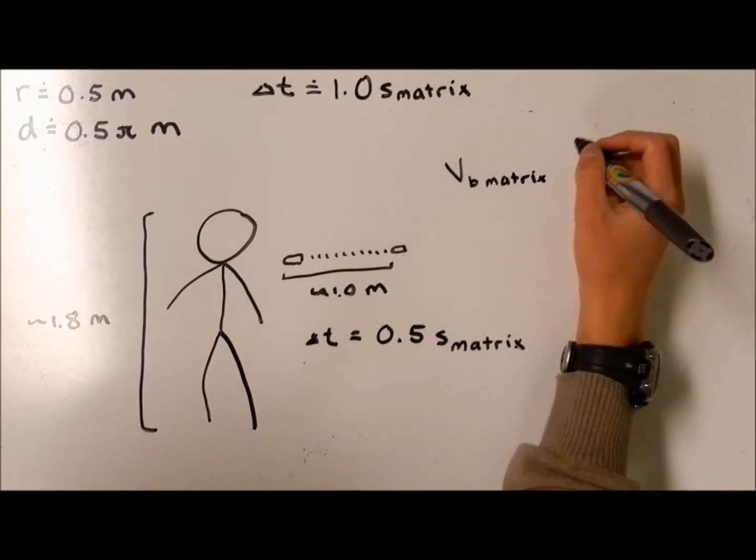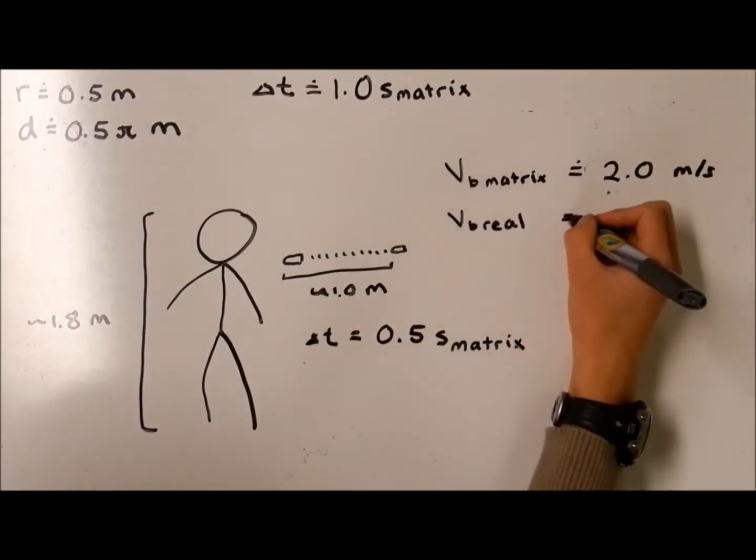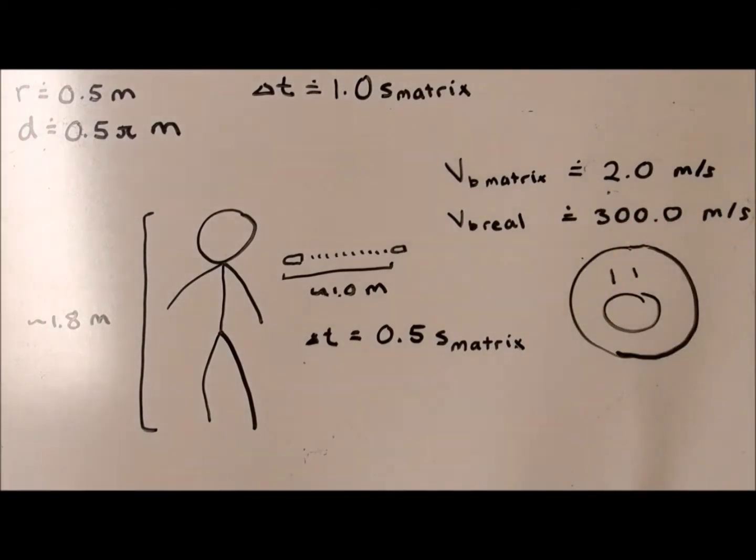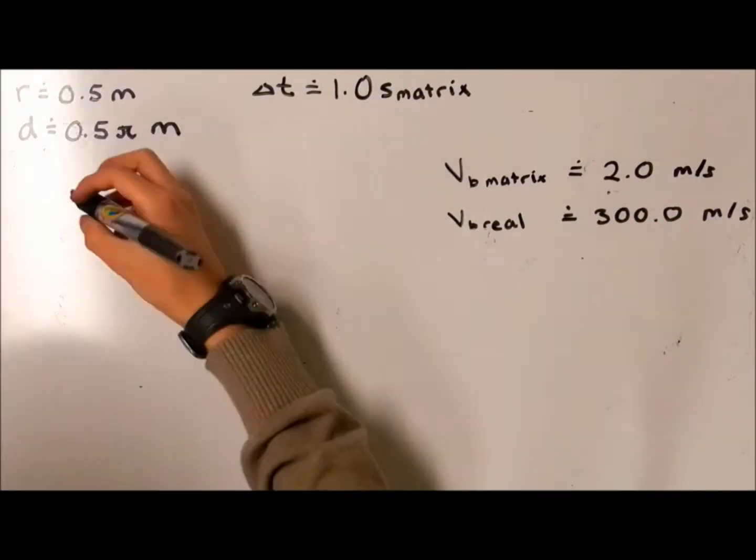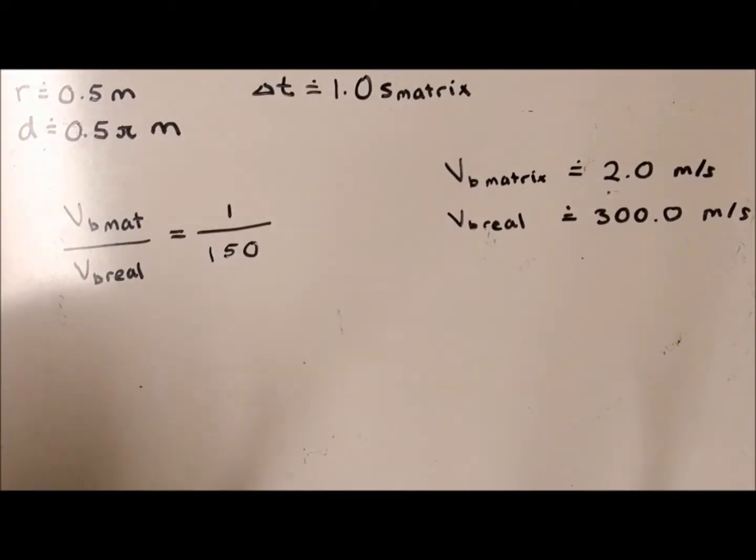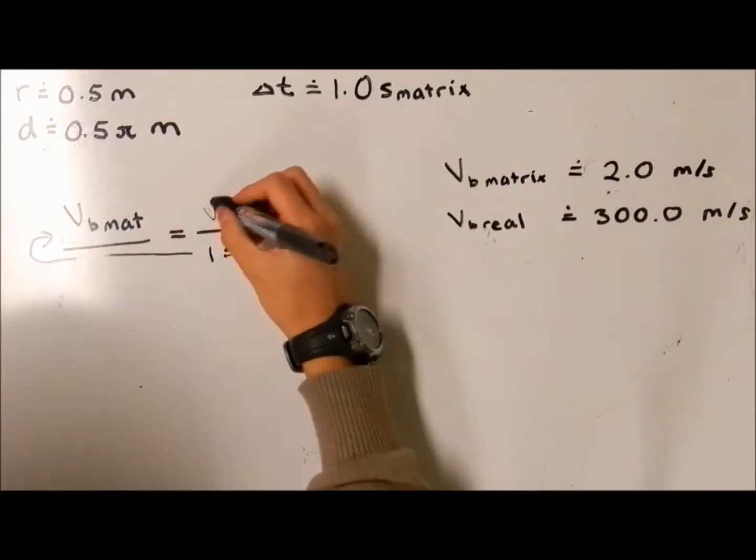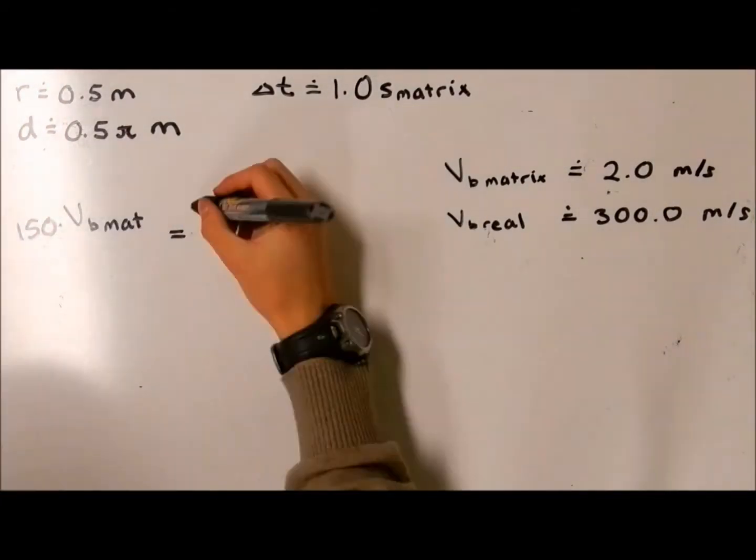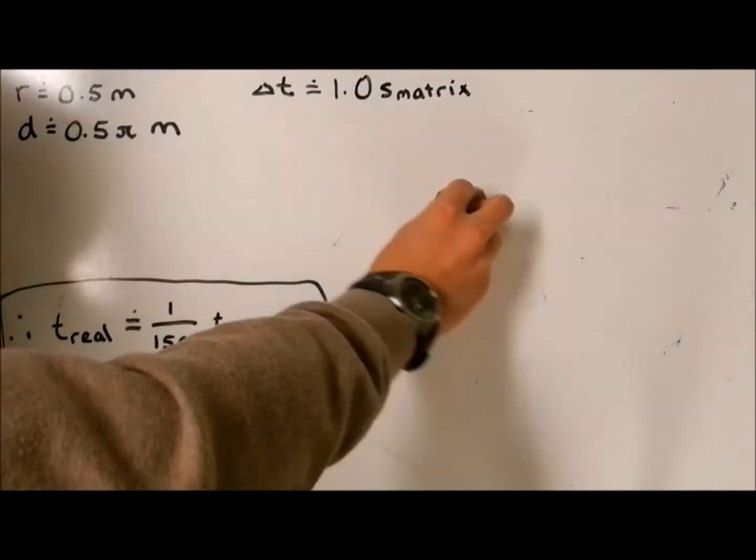We can compare this to the real speed of a bullet, 300 meters per second, which is a huge difference. We can now calculate the ratio between matrix time and real time by using the equation time equals distance over speed. As it turns out, matrix time is 150 times slower than real time.